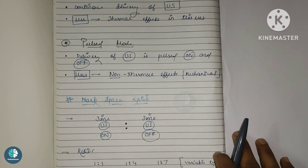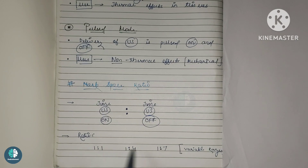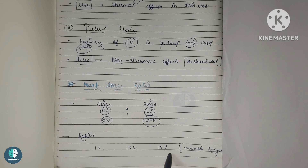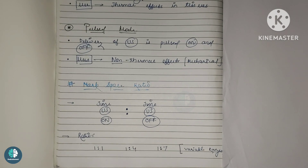Ratios are basically in three common modes: 1:1, 1:4, and 1:7. These are the variable ranges which we commonly use. They could be any value, but the common ones are 1:1, 1:4, and 1:7. Next we will see what the duty cycle means.